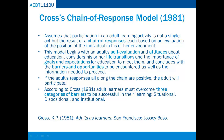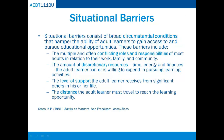According to Cross, adult learners must overcome three categories of barriers to be successful in their learning. She describes these categories as situational, dispositional, and institutional — all three barriers can operate both prior to and throughout the learning. Situational barriers consist of broad circumstantial conditions that hamper the ability of adult learners to gain access to and pursue educational opportunities. These include the multiple and often conflicting roles and responsibilities of most adults in relation to their work, family, and community; the amount of discretionary resources including time, energy, and finances the adult learner can or is willing to expend; the level of support received from significant others; and the distance the adult learner must travel to reach the learning opportunity.